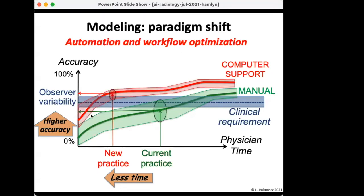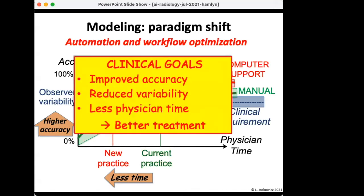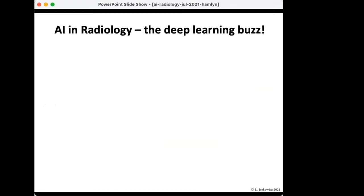With computerized support, you could reduce not only time and improve accuracy, but also quantify and reduce observer variability — which comes from the uncertainty of the procedure, the decision, and the clinician. In current practice, observer variability is quite wide: for the same amount of time, two physicians can achieve very different results in terms of clinical accuracy. If you achieve these three improvements, you are bound to get better treatment.